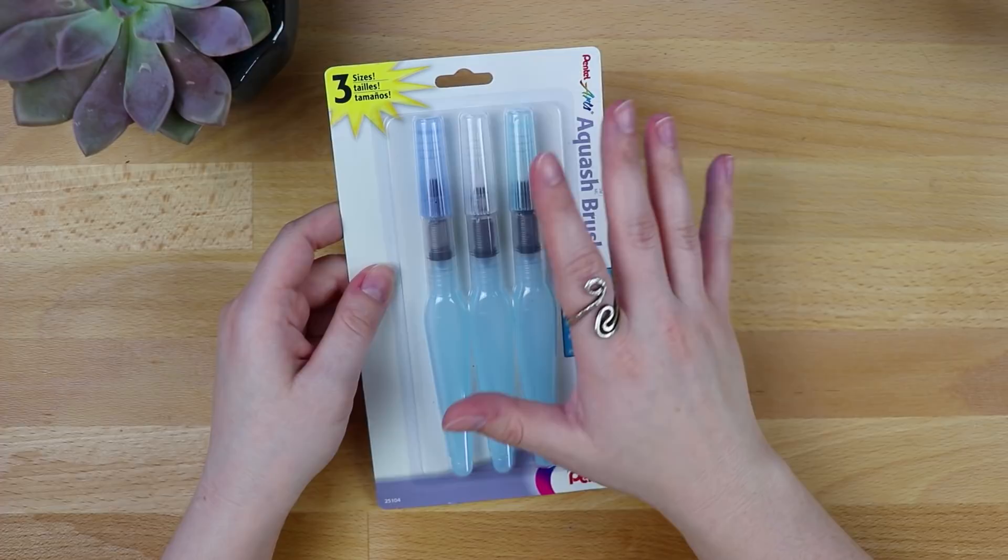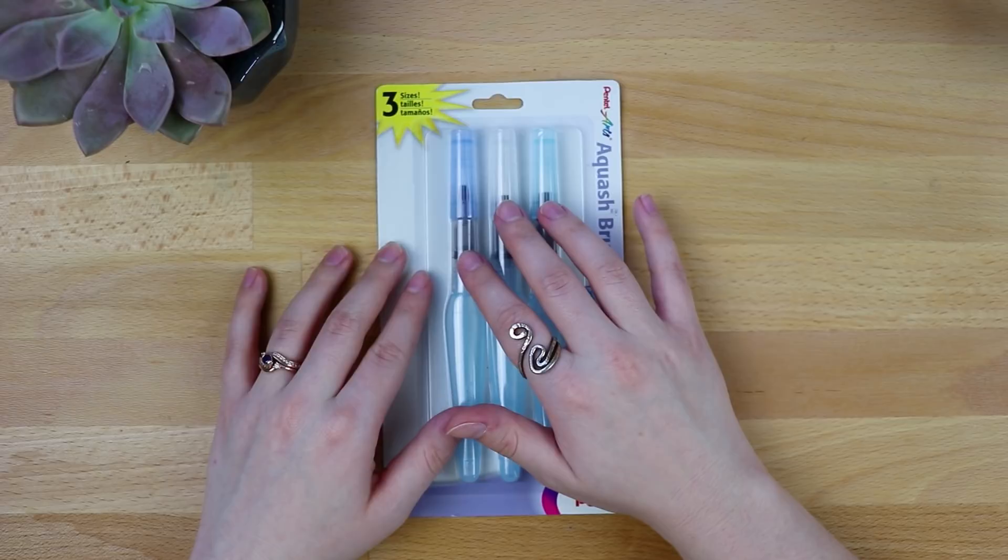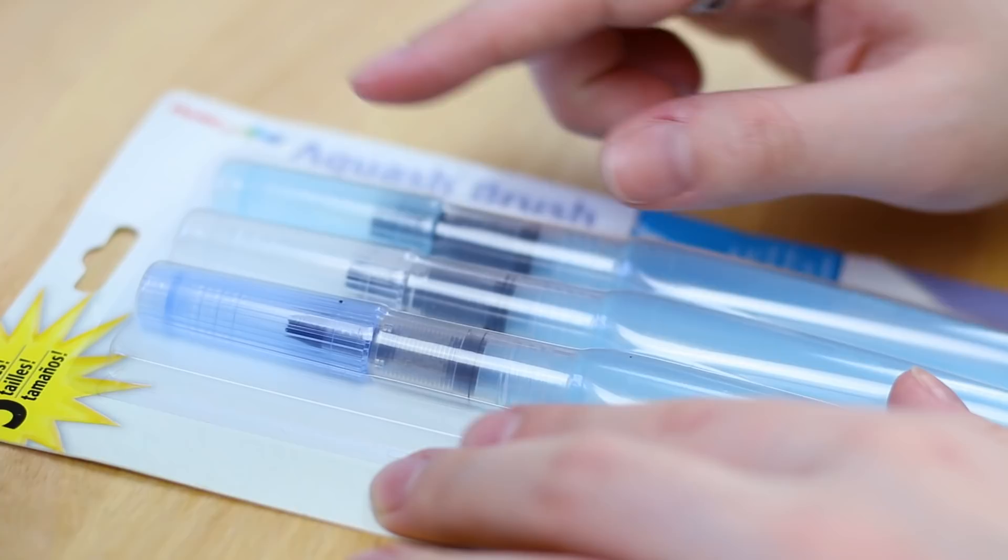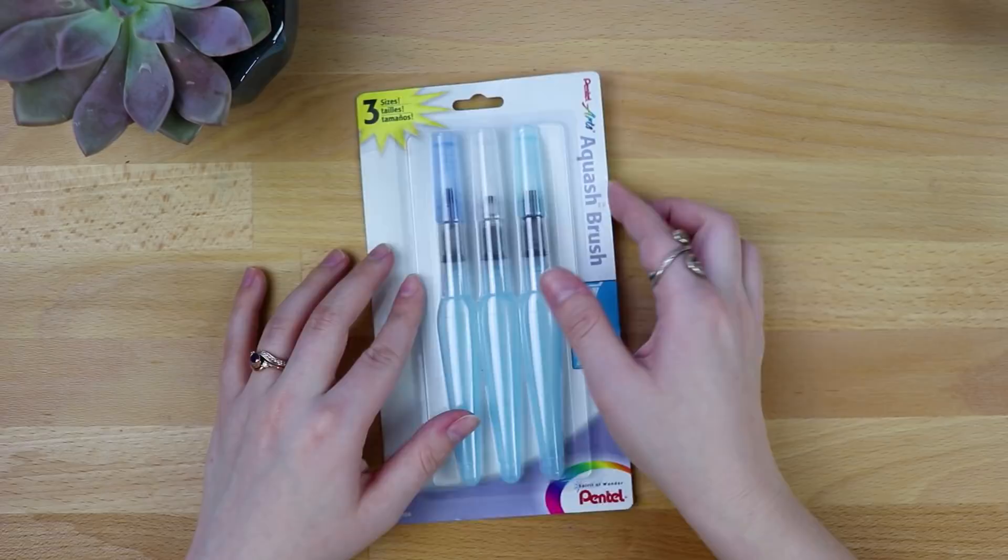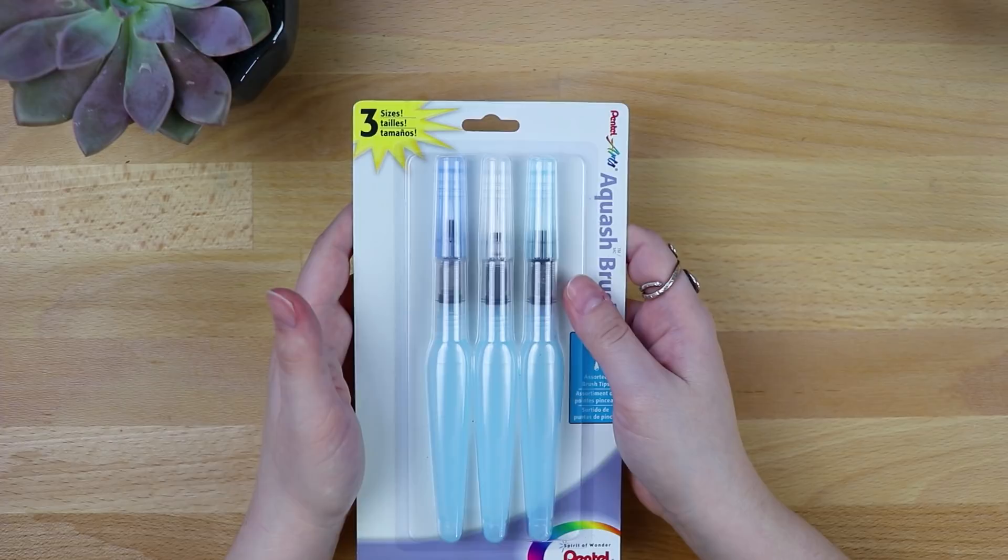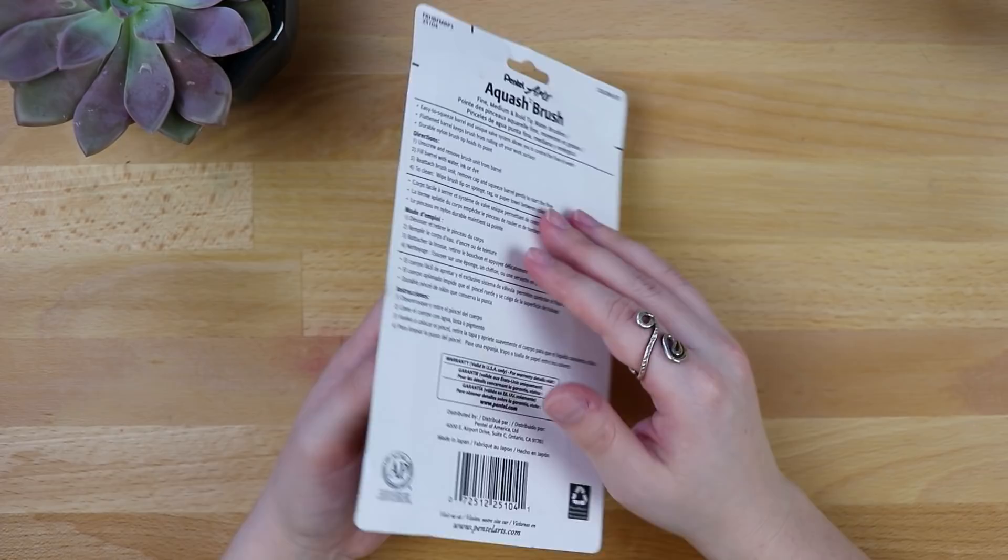When you first get these, they are just three sizes of brush pens in a pack. There's the small, the medium, and the large, which you can see that the caps are slightly different colors so you can tell them apart without having to uncap them. On the back it just comes with some directions on how to use them. It's just a standard blister pack, so let's go ahead and crack it open.